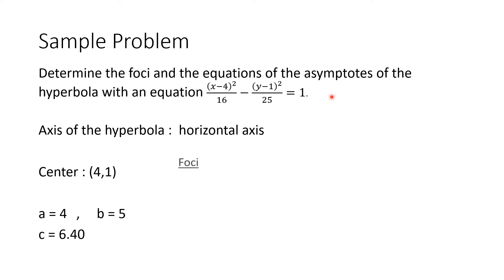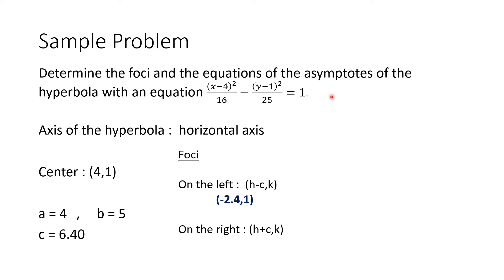To get the coordinates of our foci, we add or subtract c equals 6.4 to the h coordinate of our center, which is 4. The focus on the left has coordinates (h minus c, k), which gives approximately (negative 2.41, 1). The focus on the right is (h plus c, k), which gives approximately (10.41, 1). These are the two coordinates of our foci.